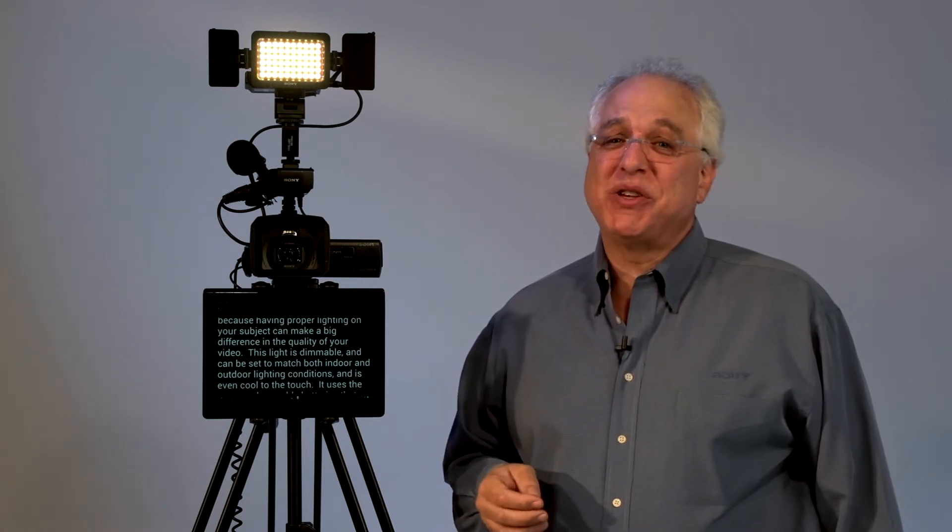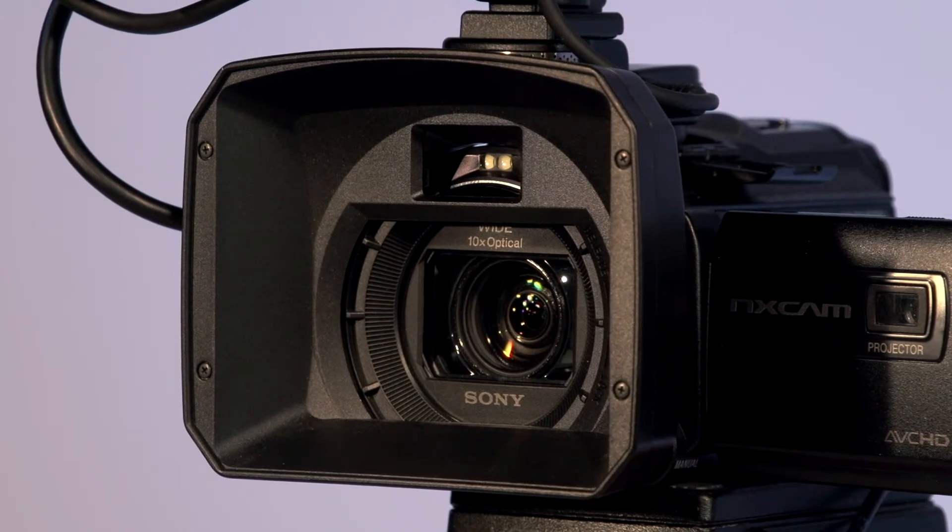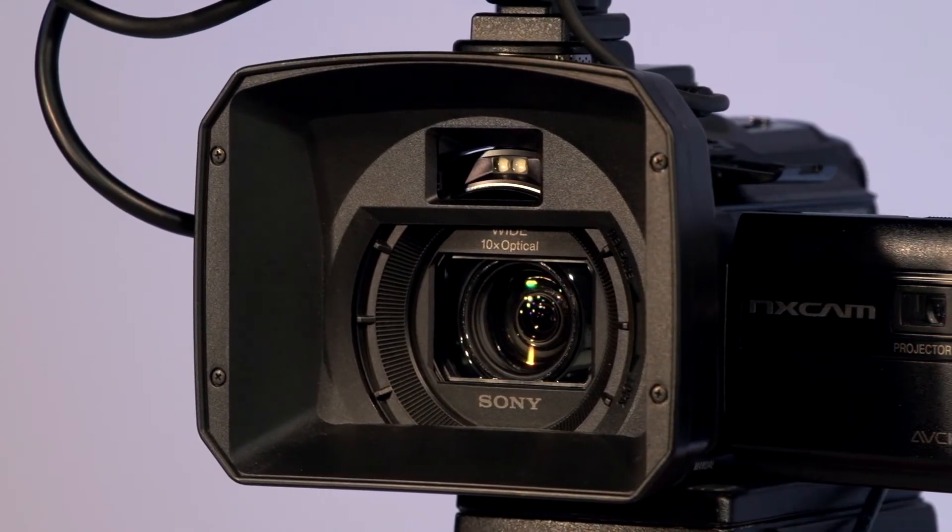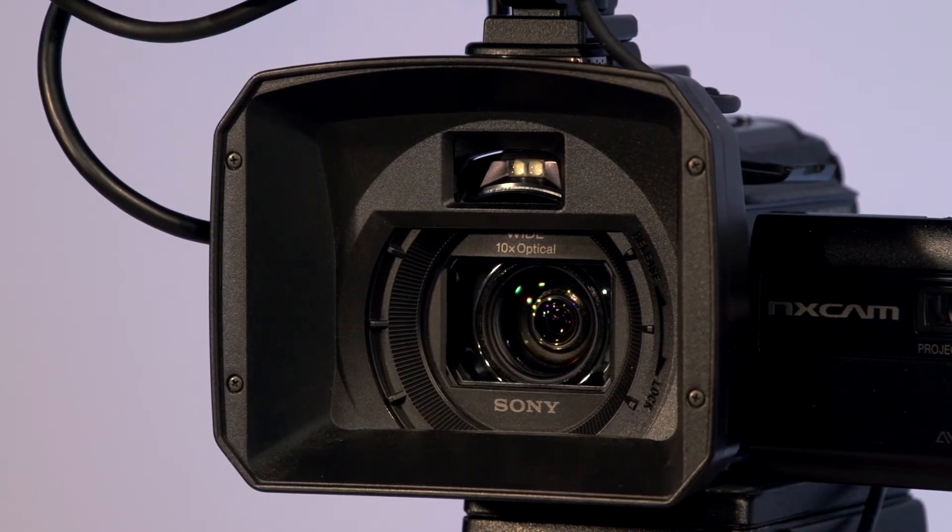First up, the centerpiece of this package, Sony's HXR NX30 Compact Professional HD Camcorder. Some of the NX30's major, and in many cases unique, features include great glass. The NX30 has an f1.8 Carl Zeiss VarioSonar 10x zoom lens that goes from 26mm to 260mm in 35mm terms.